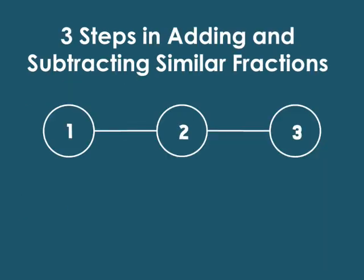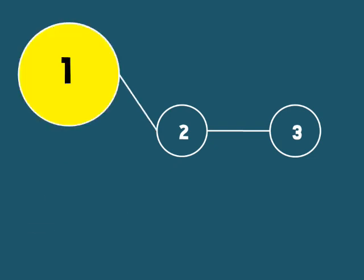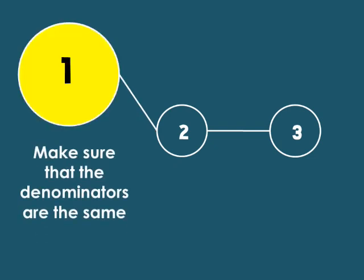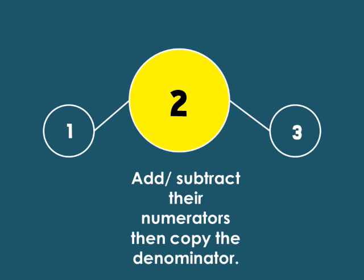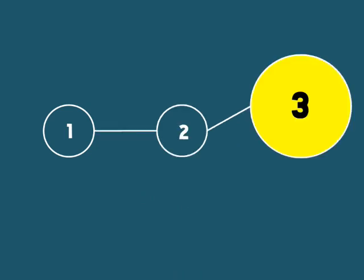Now, here are the steps in adding and subtracting similar fractions. 1. Make sure that the denominators are the same. 2. Add or subtract their numerators, then copy the denominator. 3. Simplify the fraction.